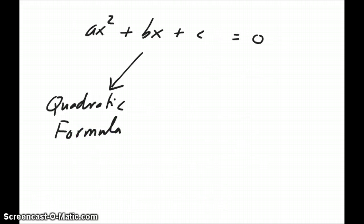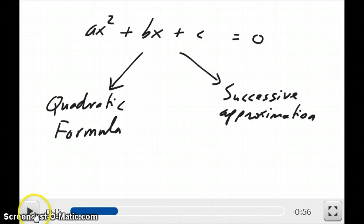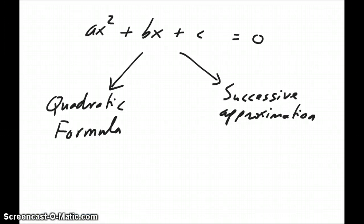So if your equation is a quadratic equation, then the easiest way to solve for x would be to just use the quadratic formula. However, there's an alternative method you can use for quadratic or higher polynomial equations and that's called successive approximation. This works, like I said, for quadratic equation but it also works for higher polynomials. For example, x to the third power, x to the fourth power and so on.